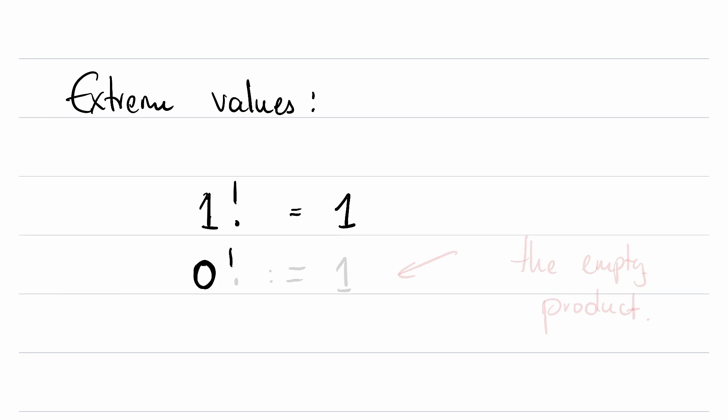So what does 0 factorial? Well, it's not entirely sure right off the bat what this means. However, we will define it to also be 1. And this is called the empty factorial or empty product.